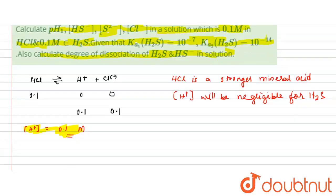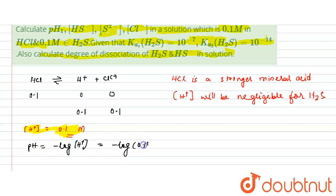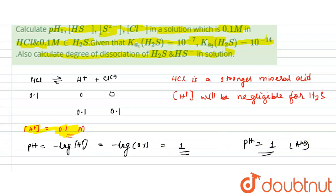Now, what was asked? The pH. So pH = −log[H⁺]. The concentration of H⁺ is 0.1, so pH = −log(0.1) = 1. The pH equals 1. This is the required answer for the first part, since H₂S does not contribute to H⁺ ion concentration because HCl is the stronger acid.